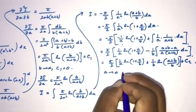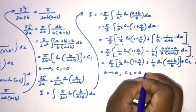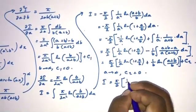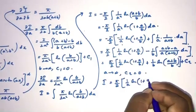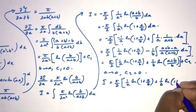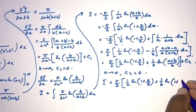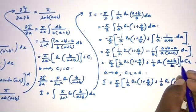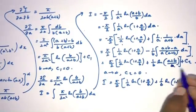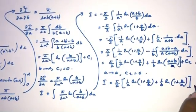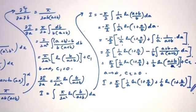When a approaches infinity, C2 equals 0. So the final answer is I = (π/2) · [(1/a)·ln(1 + a/b) + (1/b)·ln(1 + b/a)]. This is the answer for our integral. If you like this type of video, please subscribe to the channel. Thank you for watching.